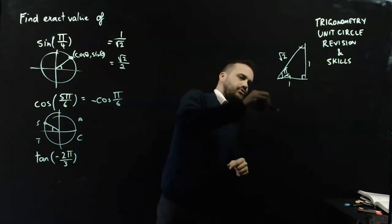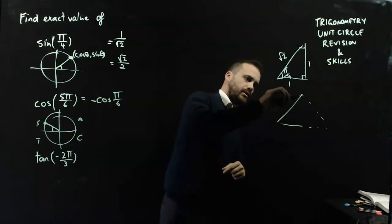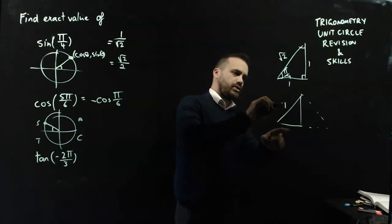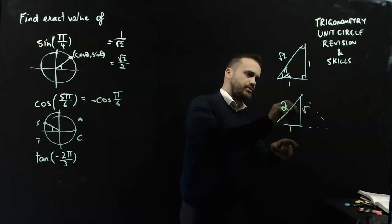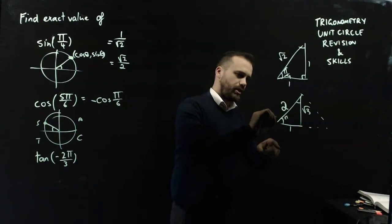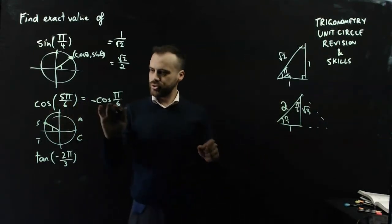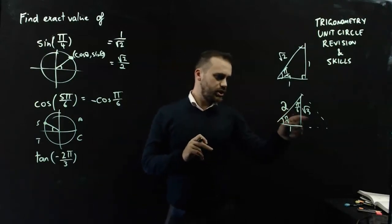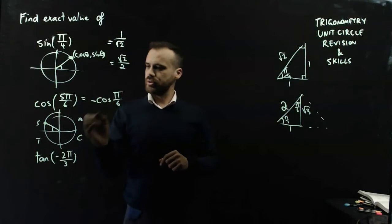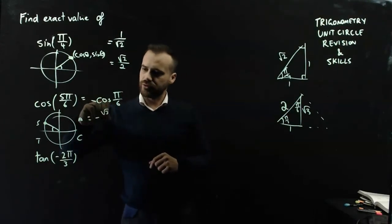I need a second standard triangle. So it's 2 there, it's 1 there, it's root 3 there, and that angle is π on 3, and this angle is π on 6. I want cos π on 6, which is adjacent over hypotenuse, root 3 on 2. But it's negative, negative root 3 on 2.